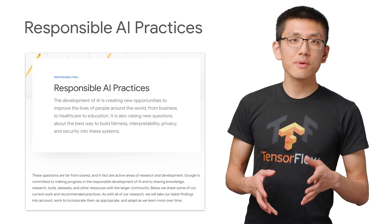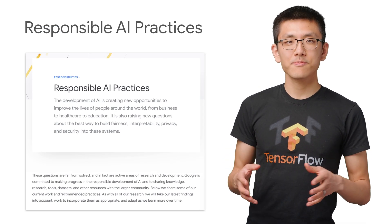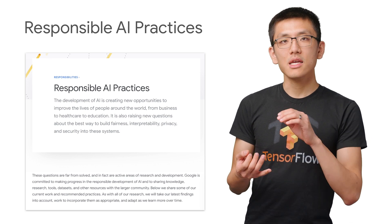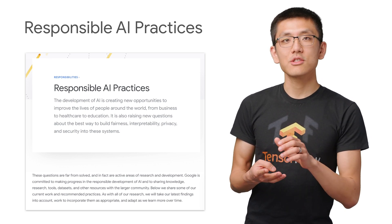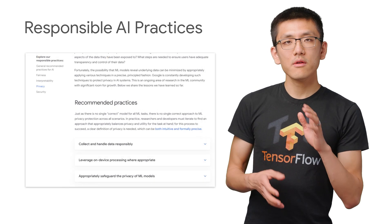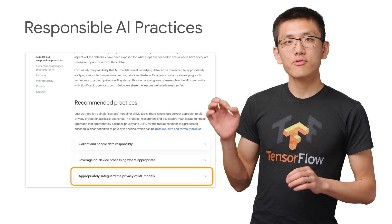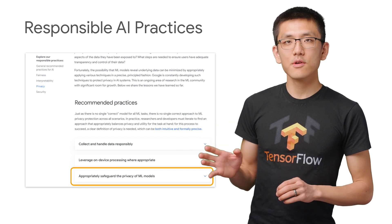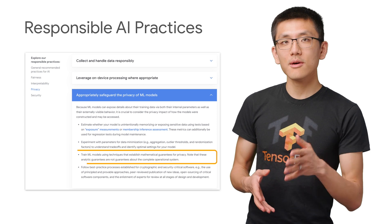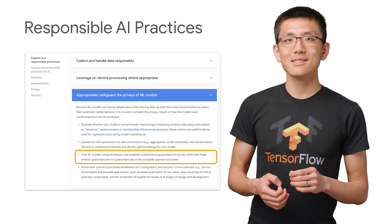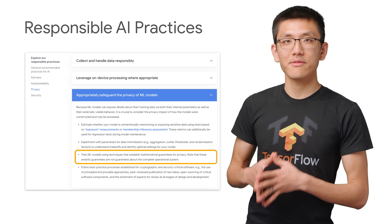Last year, Google published a set of responsible AI practices focused around fairness, interpretability, privacy, and security. One of the recommended practices in the privacy section states: appropriately safeguard the privacy of ML models, and recommends that we train ML models using techniques that establish mathematical guarantees for privacy.